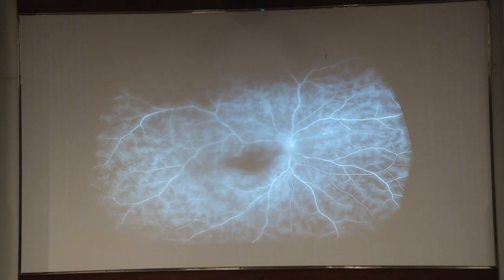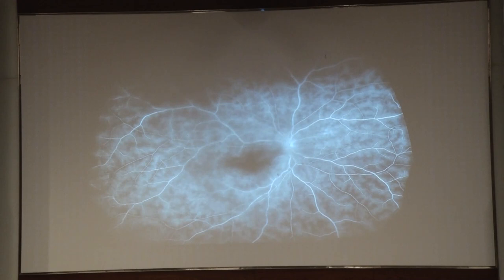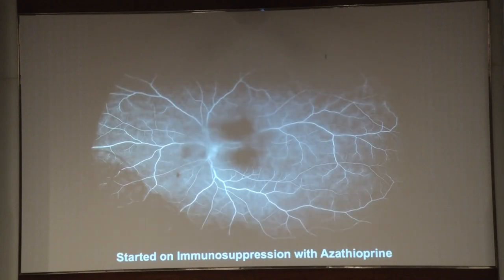Even if you don't have an Optos, you can definitely get peripheral sweeps of fluorescein angiography with your routine camera and assess the amount of inflammation in these patients. Children as young as 6 or 7-year-olds can cooperate for a fluorescein, and it becomes very important in management because at this point you can take the decision of starting the patient on immunosuppression. This patient was started on azathioprine.